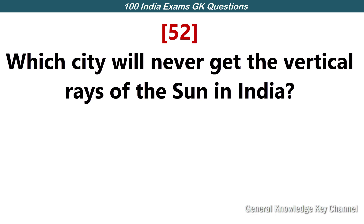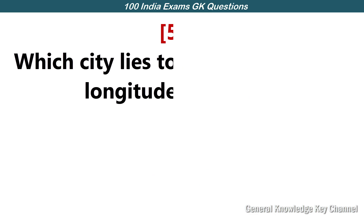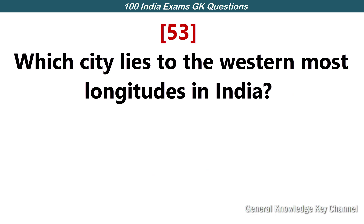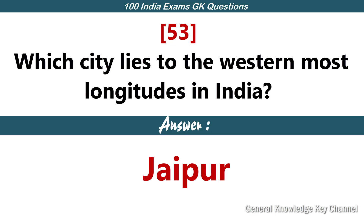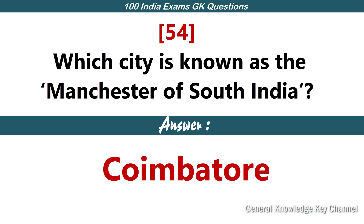Which city in India will never get the vertical rays of the sun? Srinagar. Which city lies on the westernmost longitudes in India? Jaipur. Which city is known as the Manchester of South India? Coimbatore.